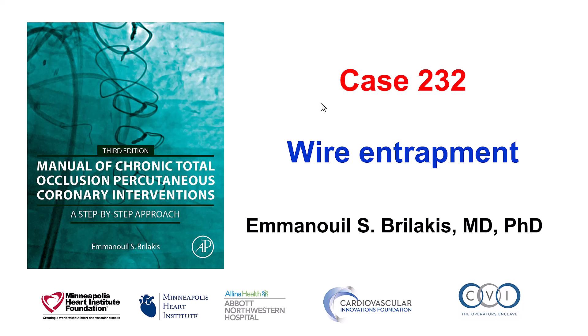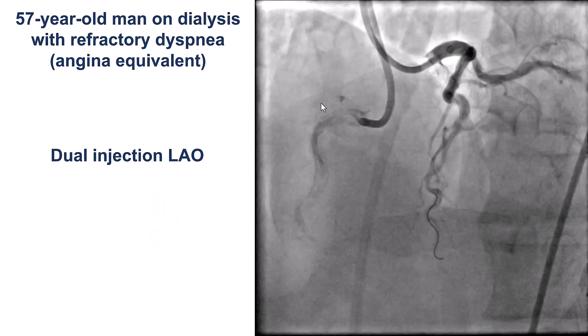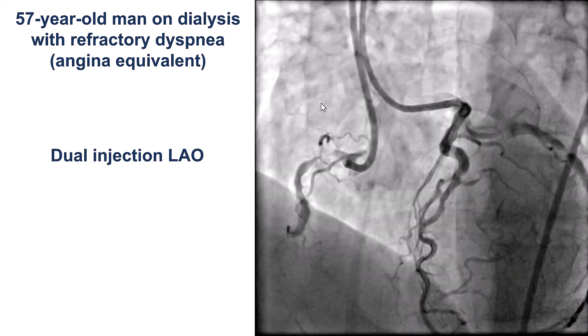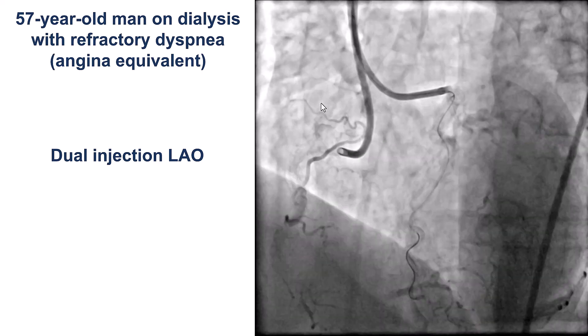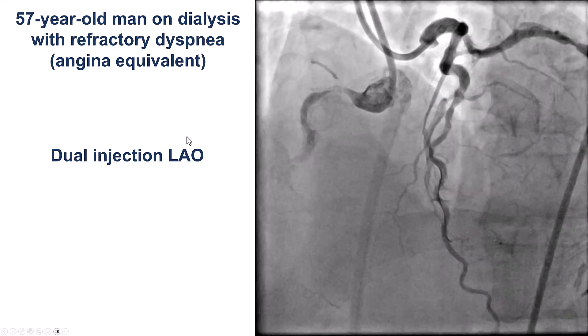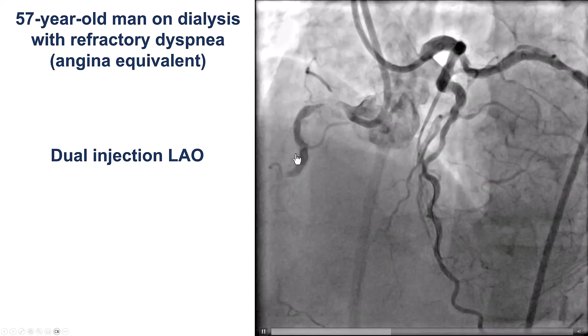This is Manos Brilakis presenting case 232 for the Manual of CTO Interventions. Building on the theme of wire problems from last week, this case focuses on wire entrapment. The patient was on dialysis and presented with dyspnea that was his angina equivalent in the setting of a right coronary artery CTO.